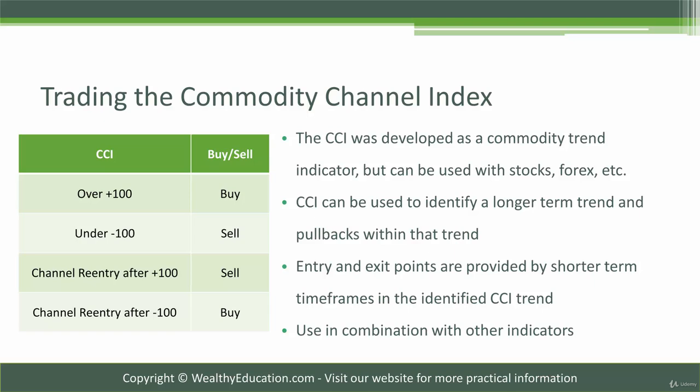CCI, like many of our other technical indicators, should be used in combination with other indicators for confirmation. CCI generally trades in a range from negative to positive 100. A move over positive 100 is a buy signal in the larger trend because it indicates that the stock or market is moving in a bullish trend. CCI under negative 100 should be sold as it identifies that the stock is moving into a bearish trend.